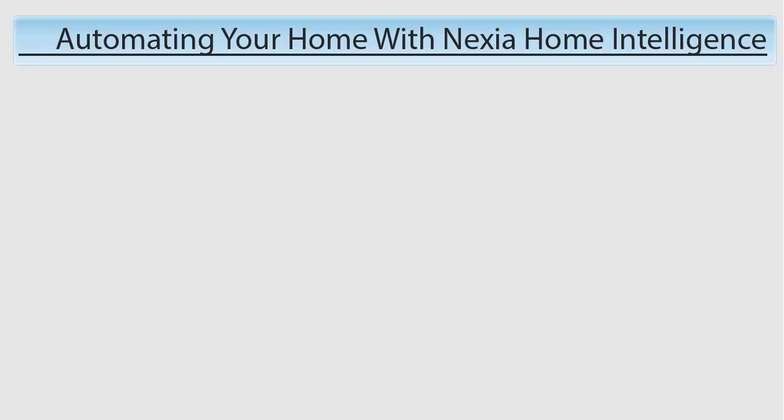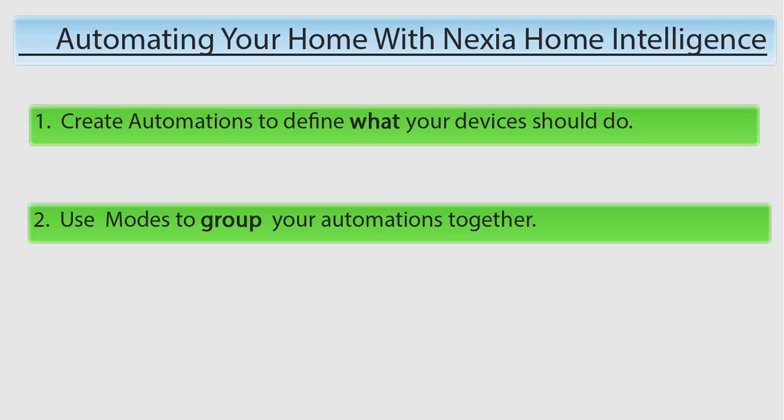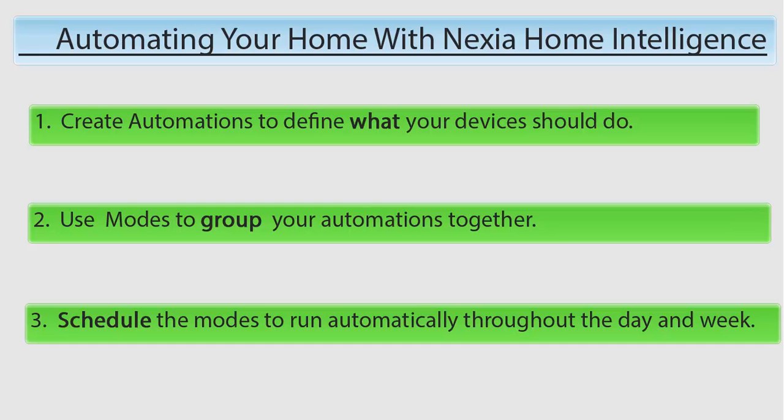To automate your home using Nexia, there are three basic steps. First, create automations to define what your devices should do. Second, use modes to group your automations together. And third, schedule your modes to run automatically throughout the day and week.